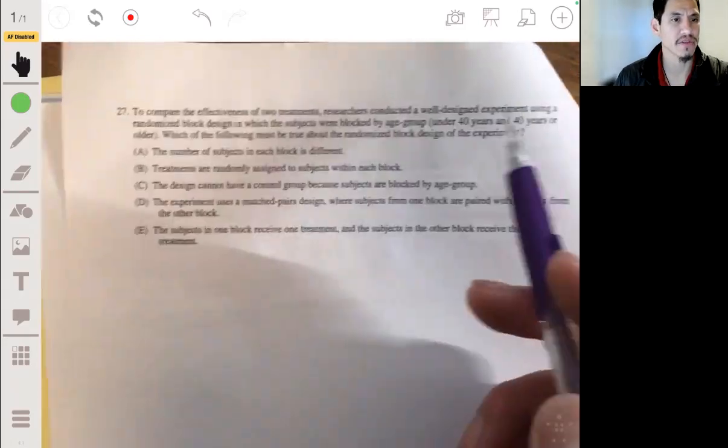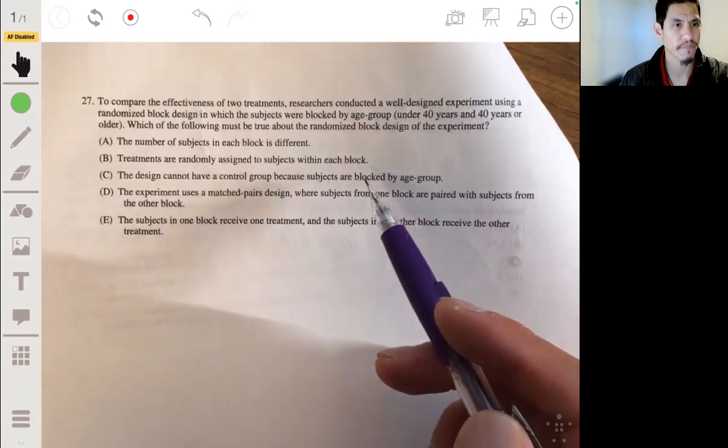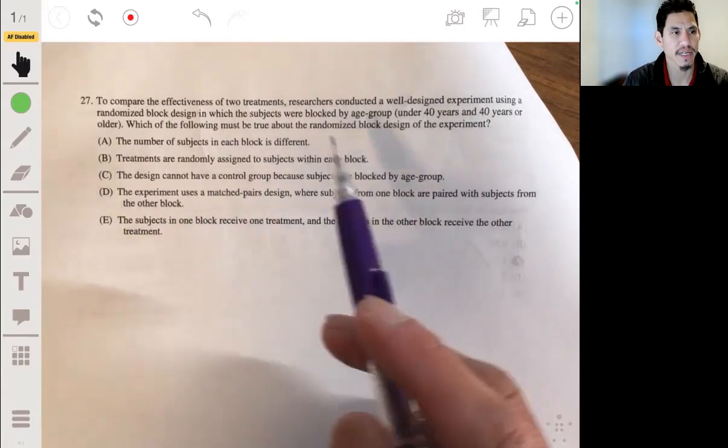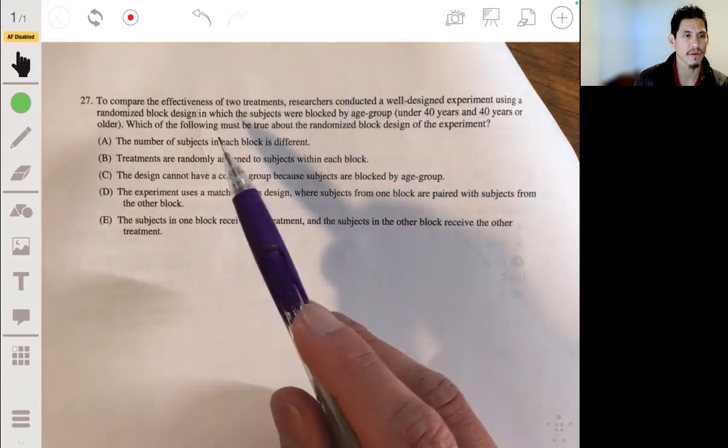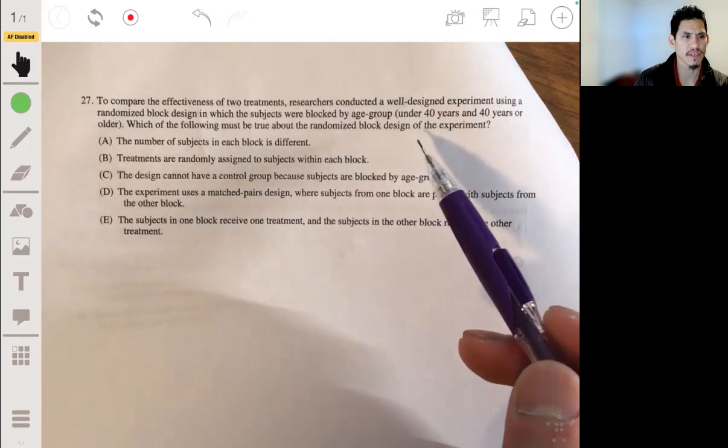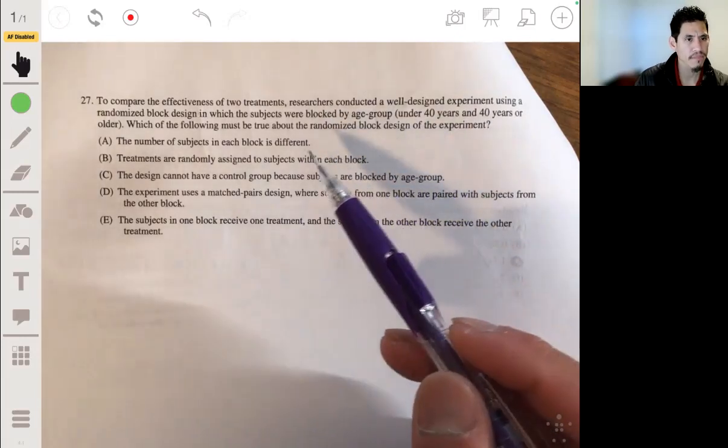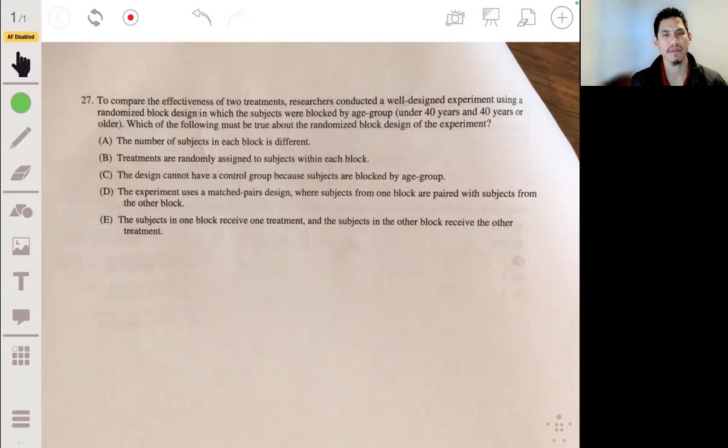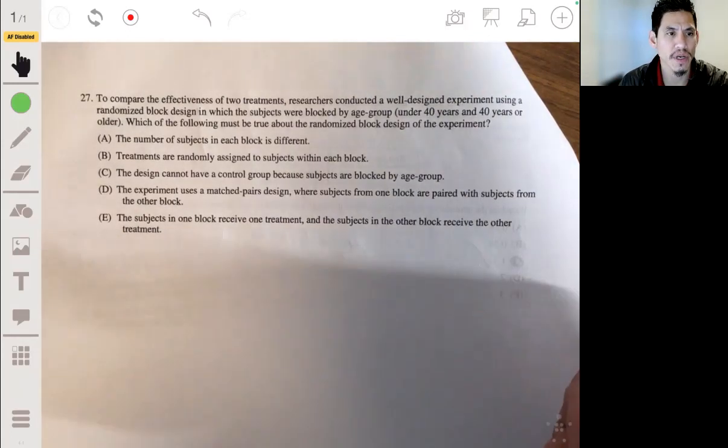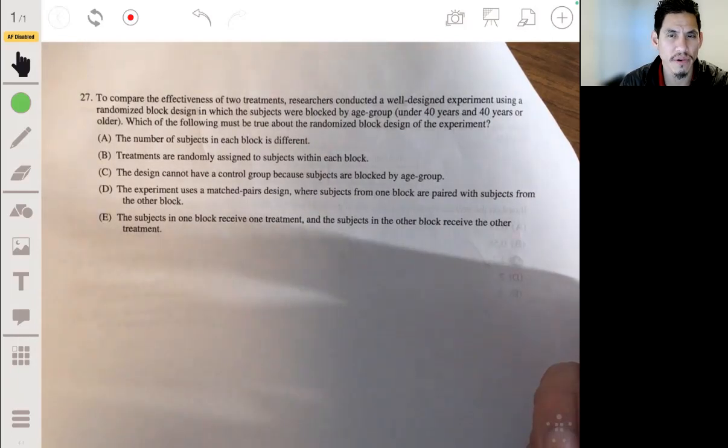To compare the effectiveness of two treatments, researchers conducted a well-designed experiment using a randomized block design in which subjects were blocked by age group, under 40 years and 40 years or older. Which of the following must be true about the randomized block design of the experiment? Okay, so remember what a block design is. It's essentially like the same concept of a stratified sample except in regards to experiments. So you basically break the subjects into groups of similar individuals according to some variable, according to some characteristic.